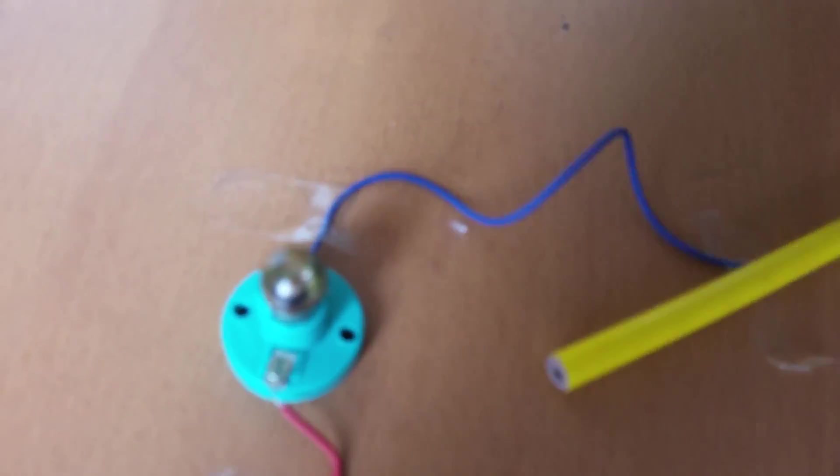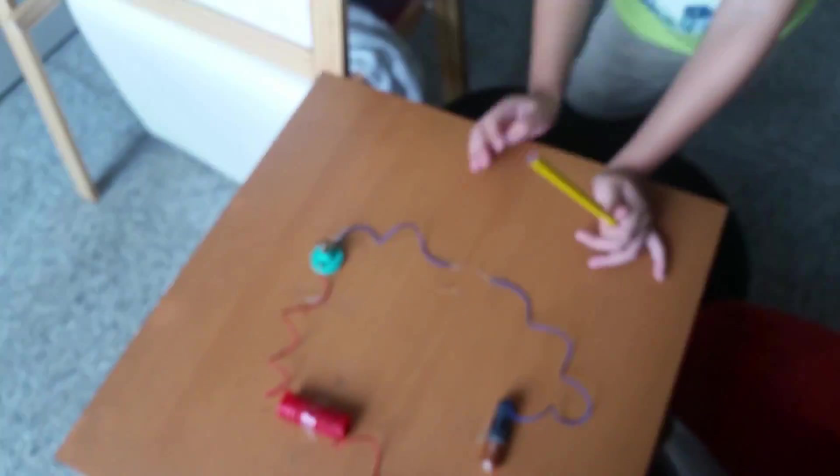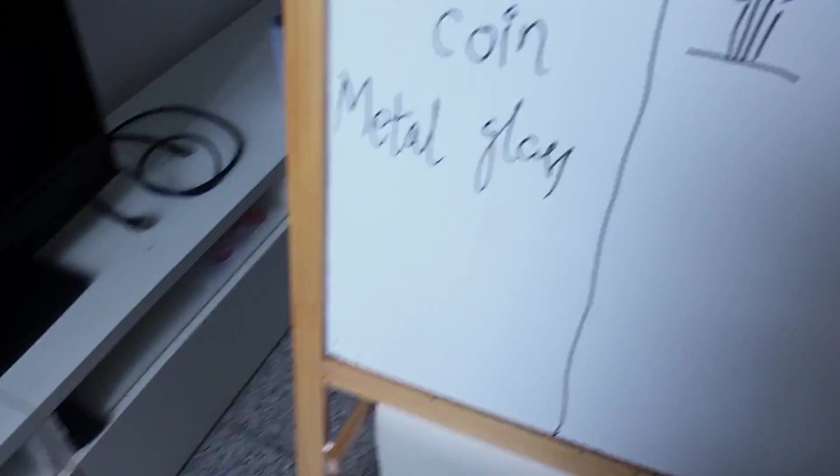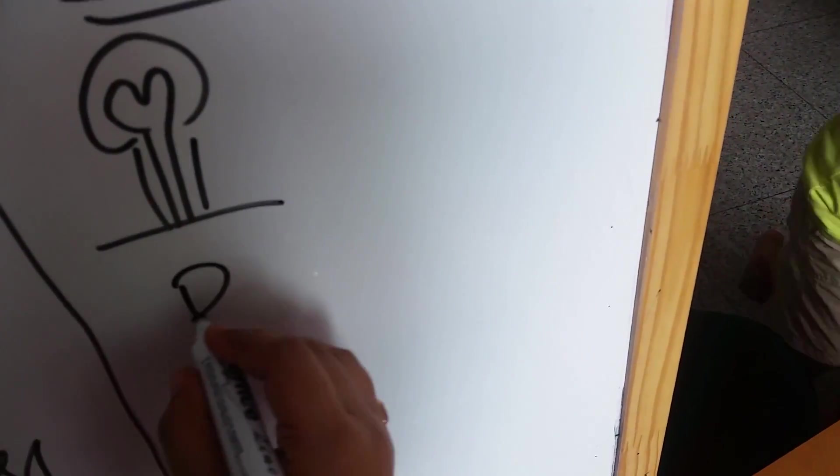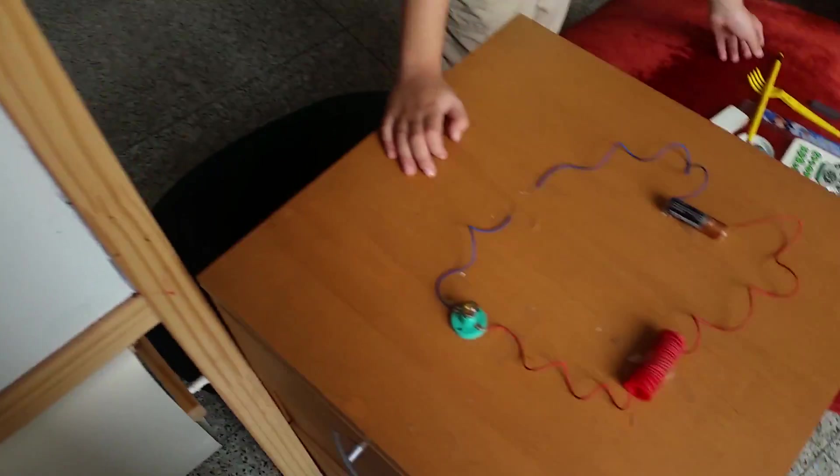However, pencil is made of wood and it's not able to conduct the electricity through it. So it's an? Insulator. What is pencil Champ? Insulator.